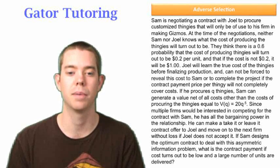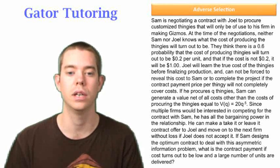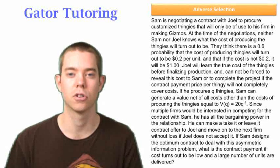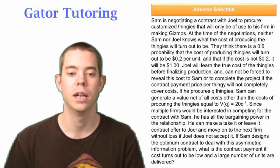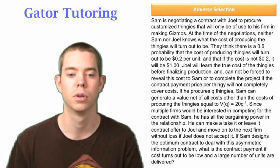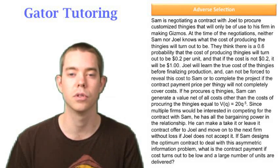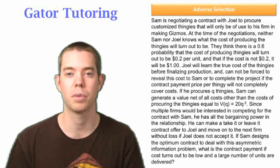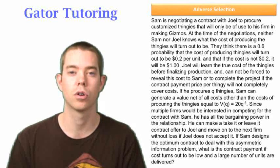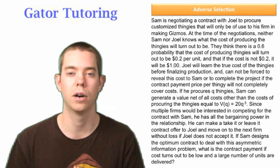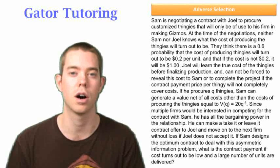So it tells us that Sam can extract a value of 20Q to the 0.5 for all the thingies that he gets out of Joel. The question says, if Sam designs the optimum contract to deal with this asymmetric information problem, what is the contract payment if costs turn out to be low and a large number of units are delivered? So what they're asking us for is PL, which is the contract payment to Joel for low cost. Keep in mind here, QL is not QL as in low demand, but QL as in low cost.